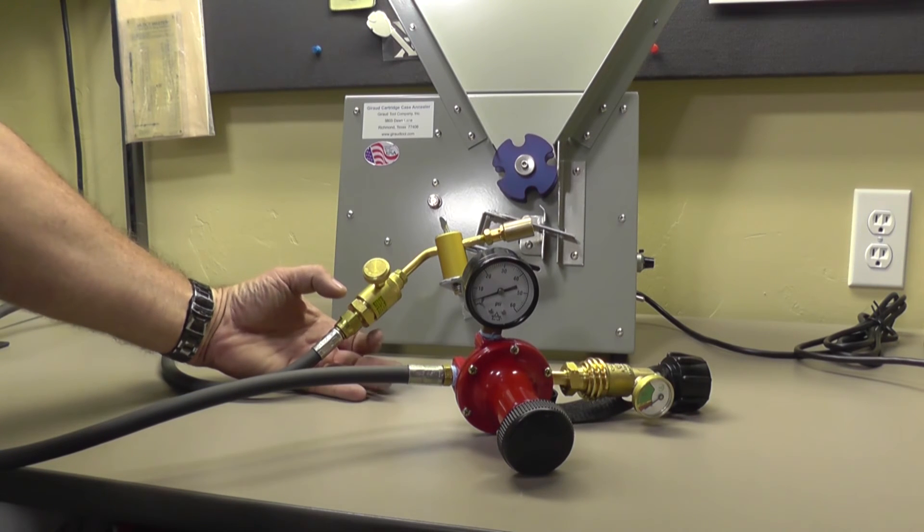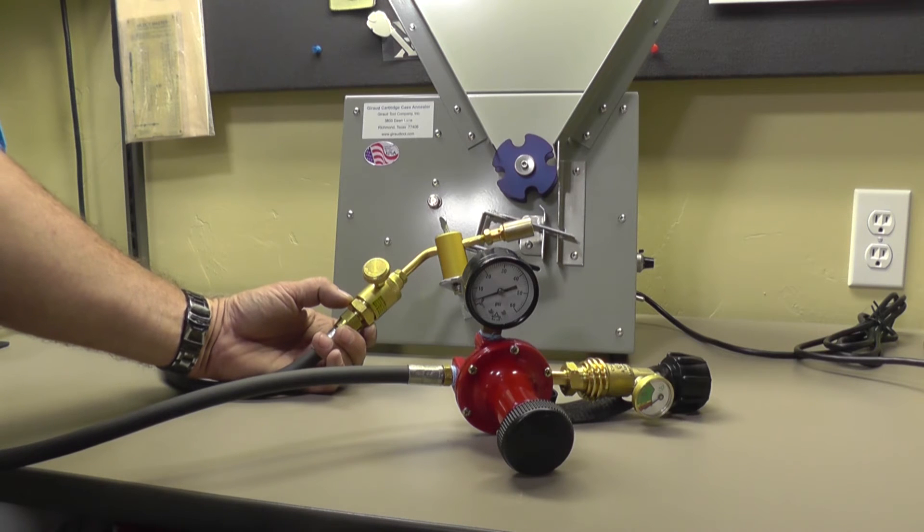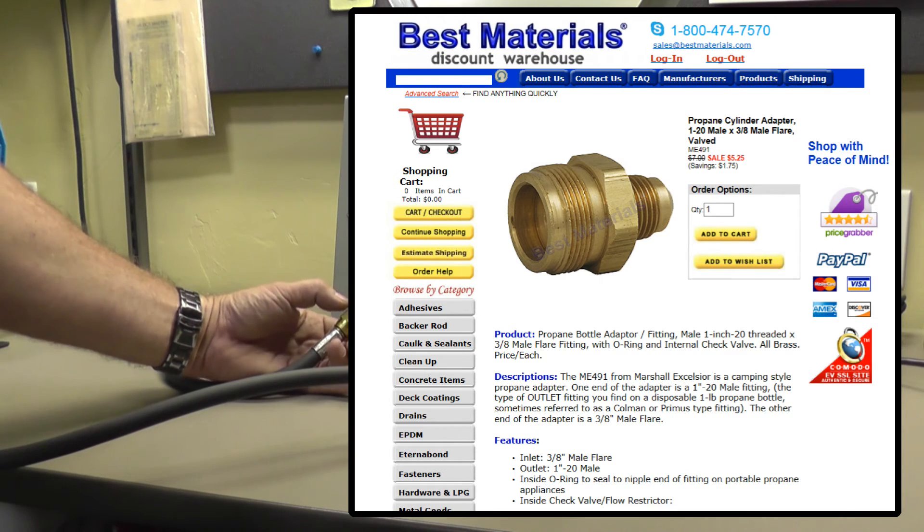And the last piece I needed was this propane cylinder adapter to connect the torch body to the hose. And Best Materials was the only place I could find this adapter anywhere.